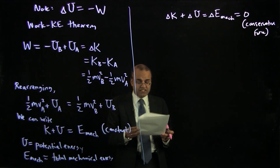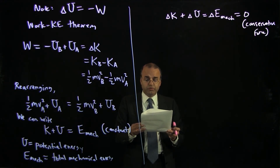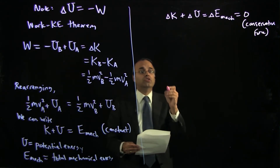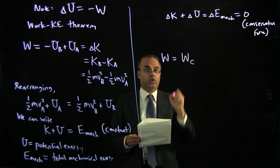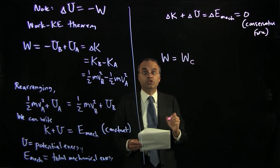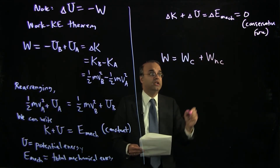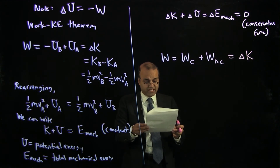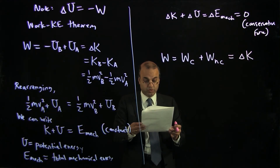The potential energy change is related to the work done by conservative forces. But in general, work can also be done by non-conservative forces, and that work will depend upon the path taken from point A to point B. The total work is given by the sum of the conservative work — which we can relate to a potential energy change — and the non-conservative work done. It's this total work that determines the change in kinetic energy. In the presence of non-conservative forces, the total mechanical energy, k plus u, is not a constant.